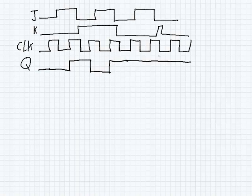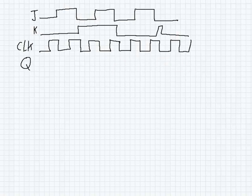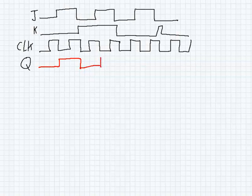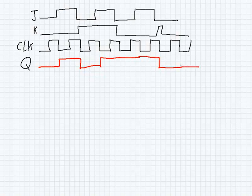Now what if this were a falling edge triggered signal? We look solely at the falling edges of the clock. Q again starts at 0. At the first falling edge, J is 1 and K is 0 — we set. Next falling edge: J is 0, K is 1 — we reset. Next: they're both 1s — toggle. Next: both 0s — latch. Next falling edge: J is 1, K is 0 — set, but we're already at 1, so no change. Next: J is 0, K is 1 — reset. Final falling edge: both 0s — latch.